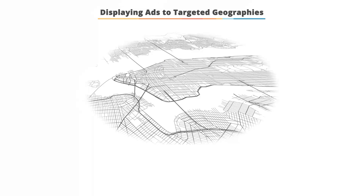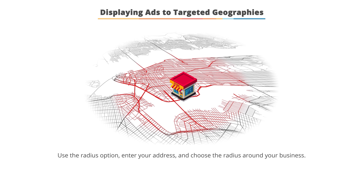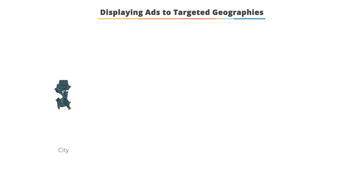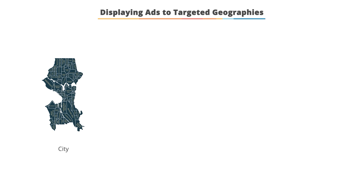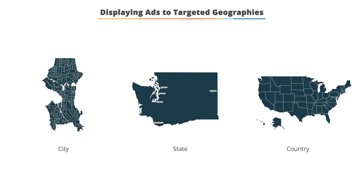For example, if you're a local business and you only want users who live within 15 miles of your business to see your ads, you can use the radius option, enter your address, and choose the radius around your business. If you only serve a city, a state, or a country, then you can easily search and select that specific location.